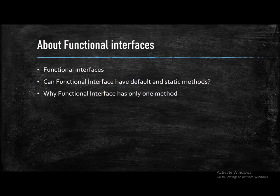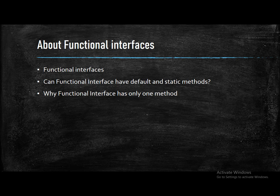The first section covers questions on functional interfaces. Can functional interfaces have default and static methods? Yes, they can. Why does a functional interface have only one abstract method? Because it works with lambda expressions — if there were multiple methods, lambda expressions wouldn't work. Those are the three questions about functional interfaces.